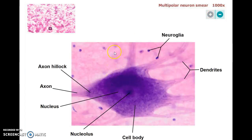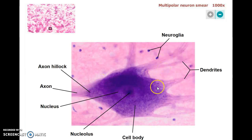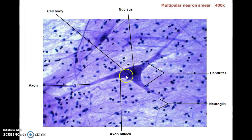Here you can see the cell even further up close with the axon coming off, definitely a dendrite coming off there, the cell body, and some of those neuroglial cells — probably astrocytes most of them. Yet another view of a motor neuron in a smear with a lot of astrocytes around it and dendrites coming off.